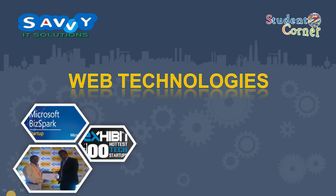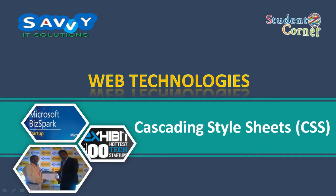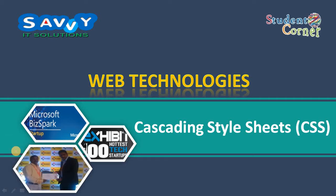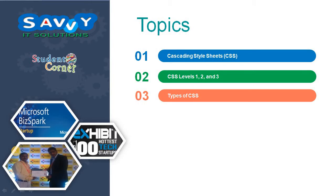Welcome to SaviIT Solutions. We are entering into a new session called Cascading Style Sheets, also called CSS. Till now we learned about HTML; now we are going further with HTML and Cascading Style Sheets. The topics covered are: what is CSS, features of CSS, CSS Levels 1, 2, and 3, and types of CSS — internal CSS, inline CSS, and external CSS — all discussed in this video.